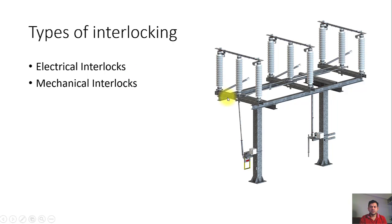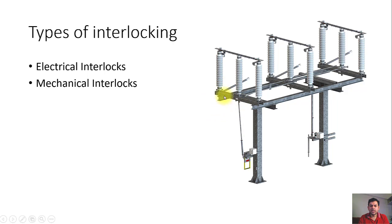Interlocking can be defined in two types: mechanical interlocks and electrical interlocks. You can see here the isolator, the controlling rod, the motor, and the mechanism. This rod is the earthing switch and this one is the isolator. If the isolator is in the closed position, you must first open the isolator before you can operate this arm upward to ground the line. This interlocking is normally provided by mechanical means — a mechanical interlock prevents operation of the earthing switch if the isolator is in closed position.